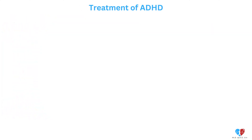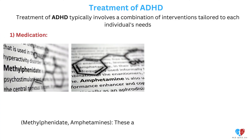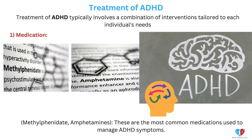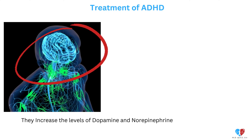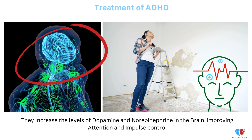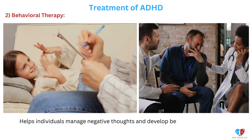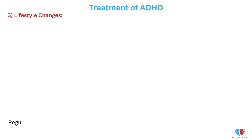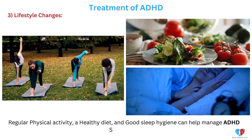Treatment of ADHD. Treatment typically involves a combination of interventions tailored to each individual's needs. 1. Medication — Methylphenidate, amphetamines. These are the most common medications used to manage ADHD symptoms. They increase the levels of dopamine and norepinephrine in the brain, improving attention and impulse control. 2. Behavioral therapy — helps individuals manage negative thoughts and develop better coping strategies. 3. Lifestyle changes — regular physical activity, a healthy diet, and good sleep hygiene can help manage ADHD symptoms.